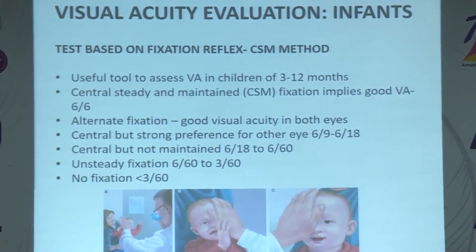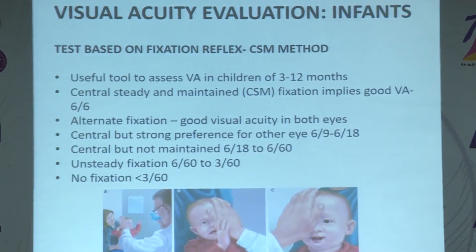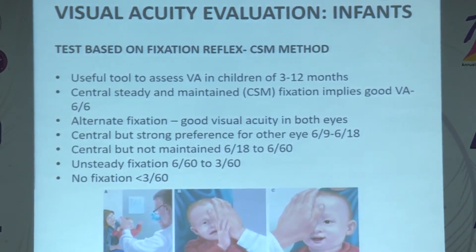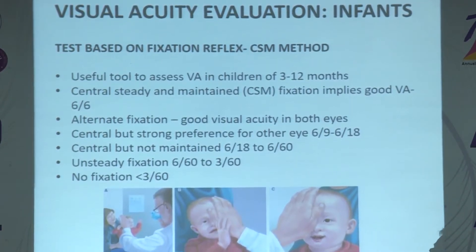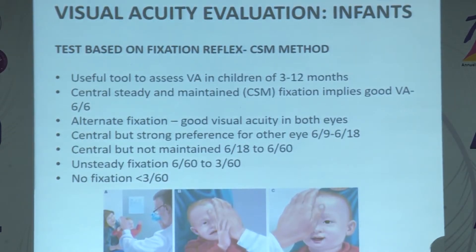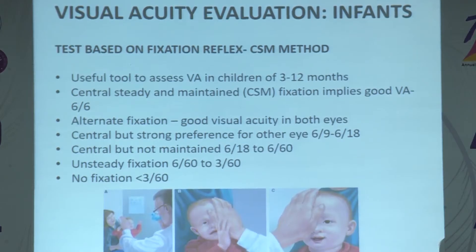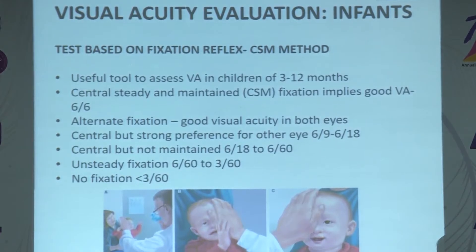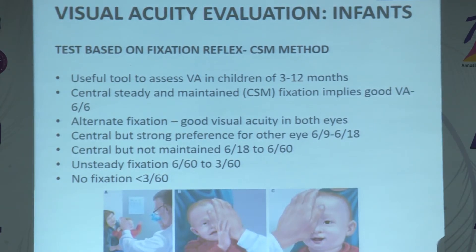Evaluating visual acuity in infants is tricky, so we use the fixation reflex or fixation pattern. The CSM method is a useful tool to assess visual acuity in children between three to twelve months. Central, steady, and maintained fixation implies good vision in both eyes. Alternate fixation also indicates good visual acuity. Central but strong preference for the other eye indicates slightly reduced vision. Central but not maintained indicates moderate vision loss. Unsteady fixation or no fixation indicates marked loss of vision.